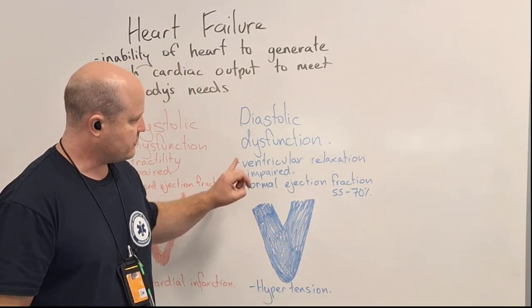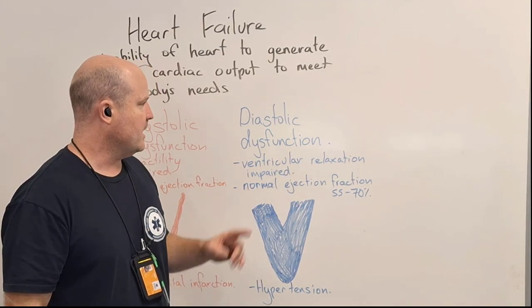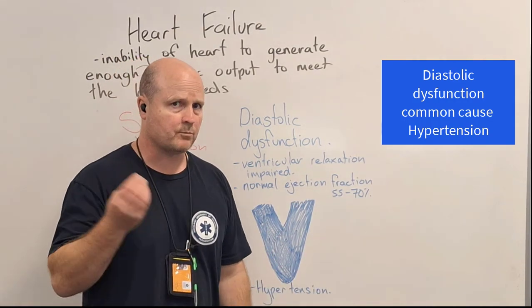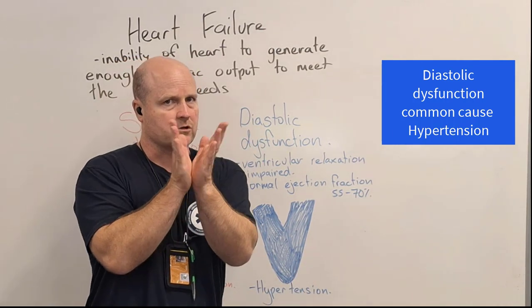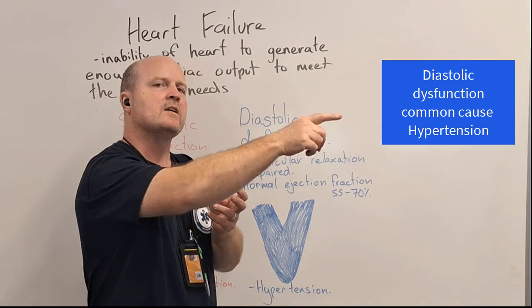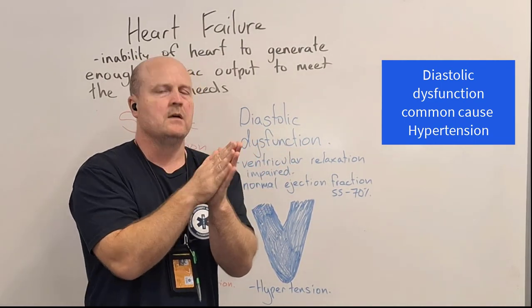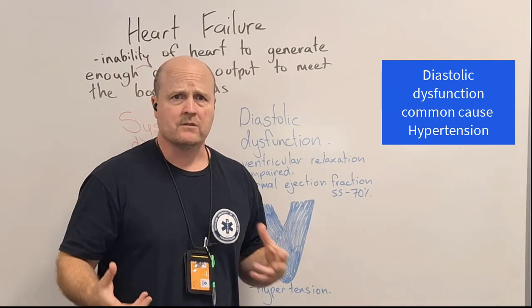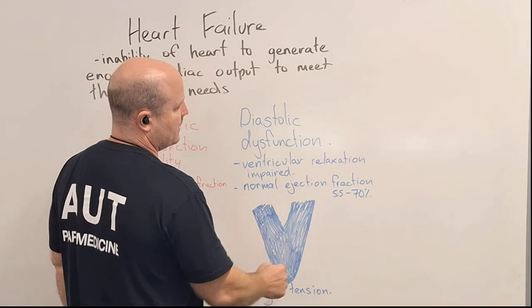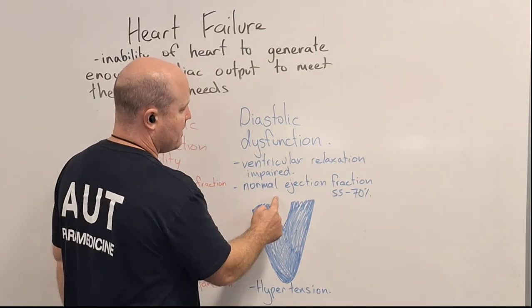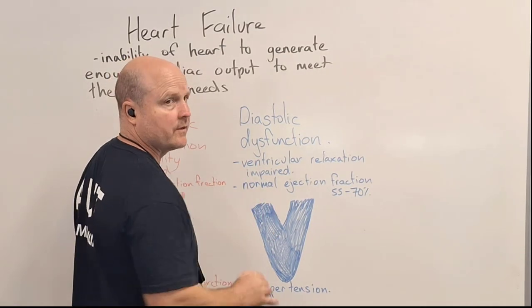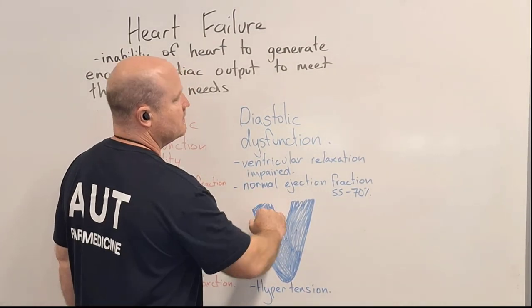Here's an example of a ventricle with diastolic dysfunction. An example of how this happens would be hypertension. With hypertension there's too much pressure in the arteries, so every time the ventricle contracts it has to overcome all that tension to get blood out — too much afterload. The heart constantly has to work hard to overcome the afterload of hypertension. Just like any other muscle, if you work it, it gets bigger and stronger. But with the heart, if the ventricle wall gets bigger, stronger, and thicker — hypertrophy — the volume inside becomes smaller. So when the heart tries to relax, there's a smaller bucket for blood to come in, meaning less blood coming in and less going out.